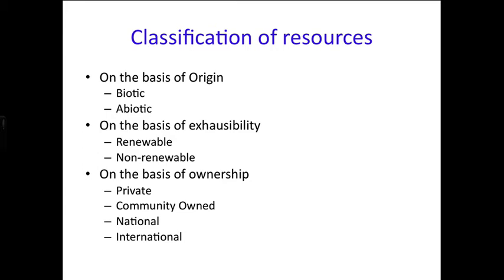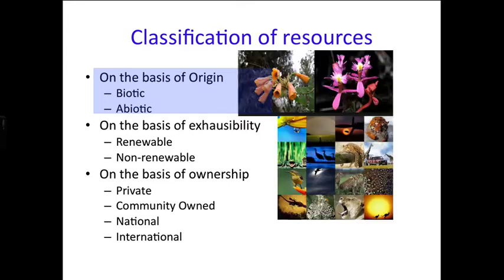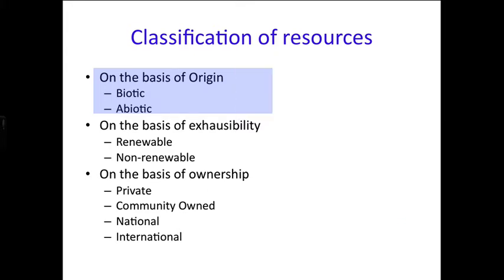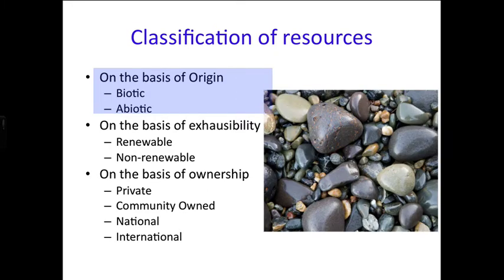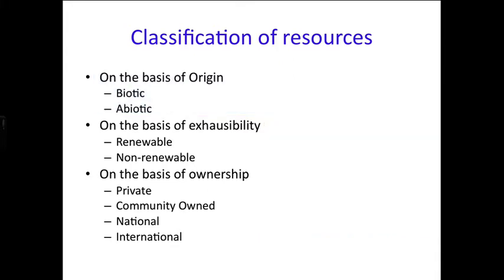Resources are classified on the basis of origin into biotic and abiotic. Biotic resources are all those obtained from the biosphere — that is, living things, which could be human, flora, or fauna. Abiotic resources are those composed of non-living things such as rocks, metals, and fossil fuels.